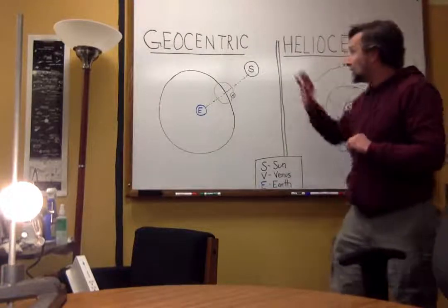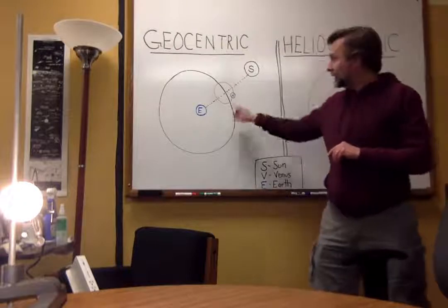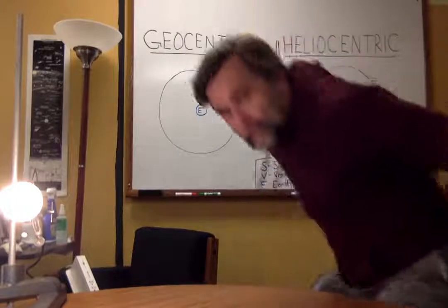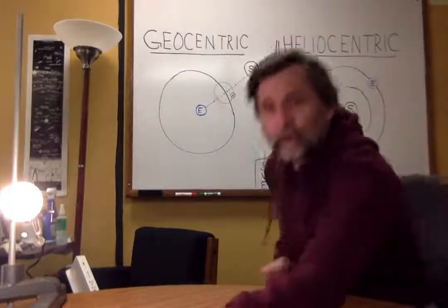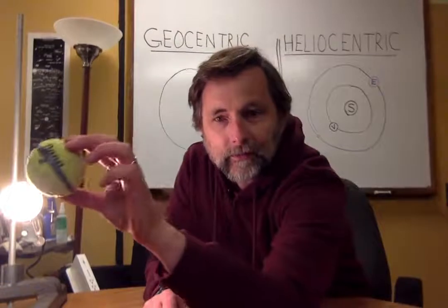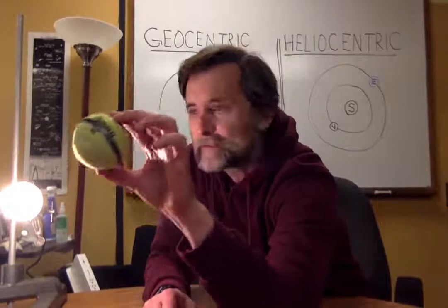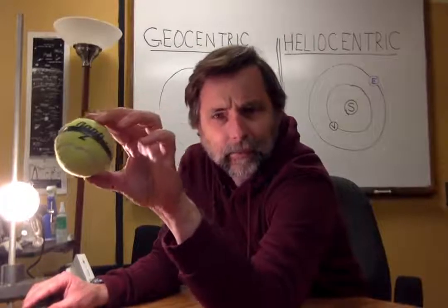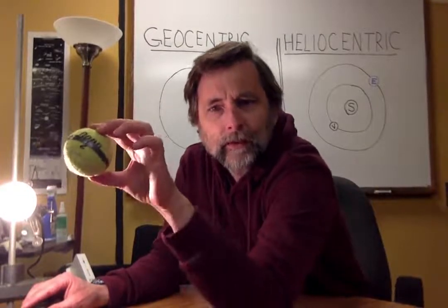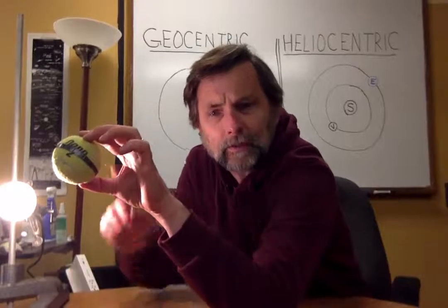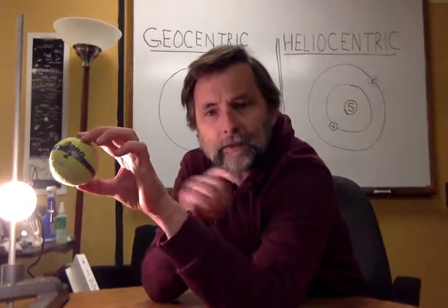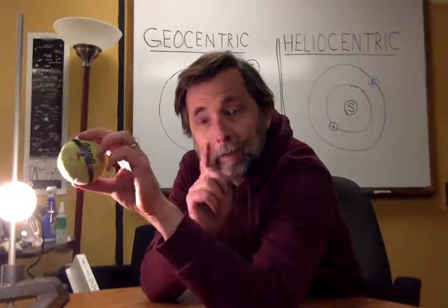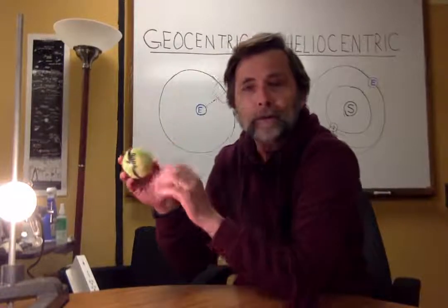So, in the geocentric model, Venus should always be a crescent. When Galileo observed Venus with his telescope, he sometimes found this crescent shape, like you can see right about here. That crescent shape was consistent with both the heliocentric and the geocentric model, because both predict that the Moon should sometimes be between the Earth and the Sun.